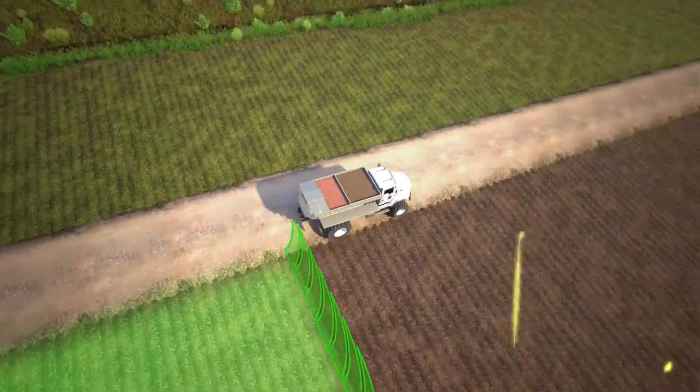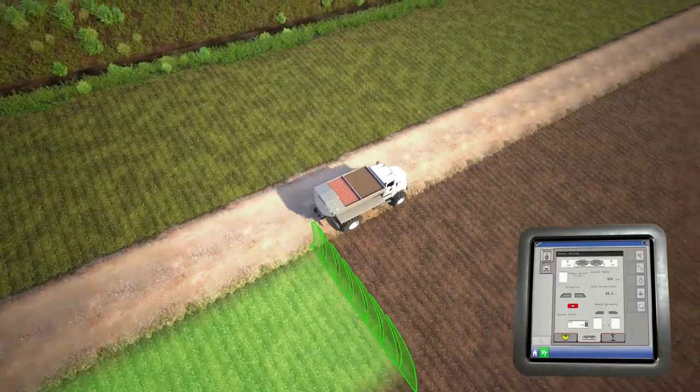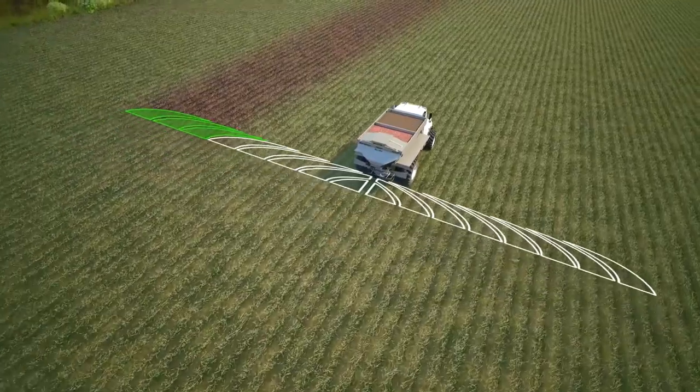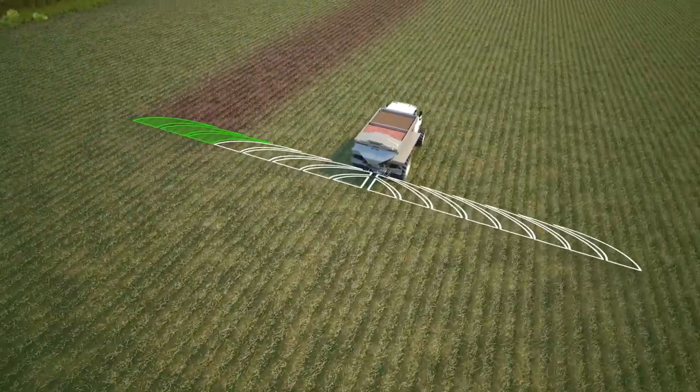New G5 technology also provides half-width or remote spreading capabilities. This also gives last-pass control, allowing for a reduced swath width when finishing a field with a less-than-full pass.